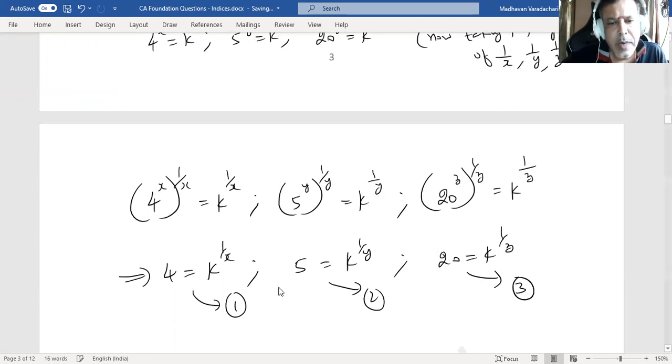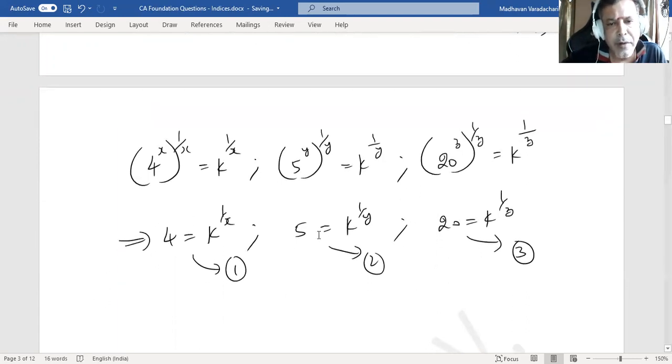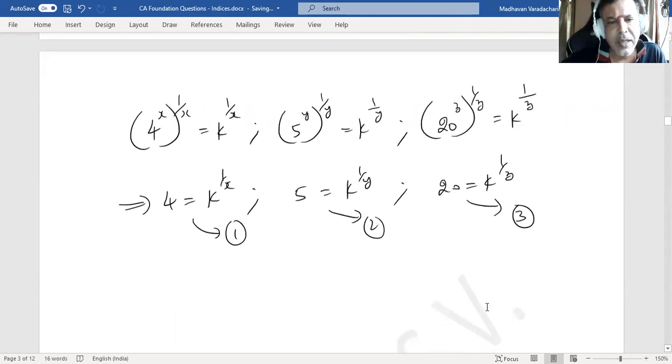One thing is clear: if I multiply 4 into 5 I will get 20. That means I can multiply the first equation into the second equation to get the third equation.